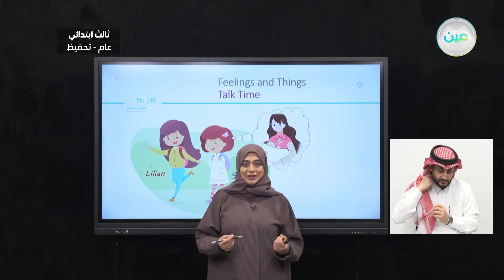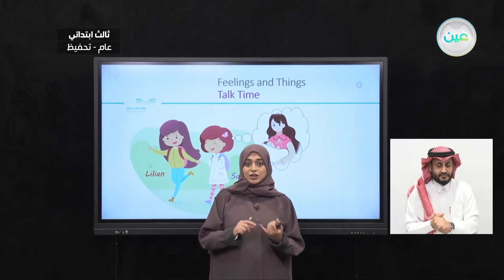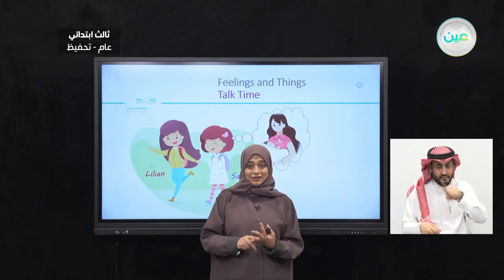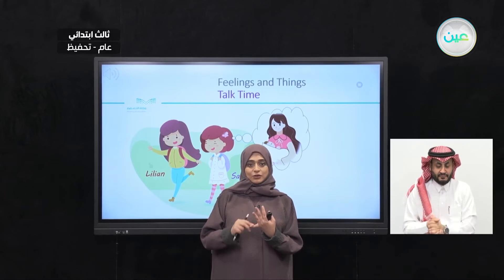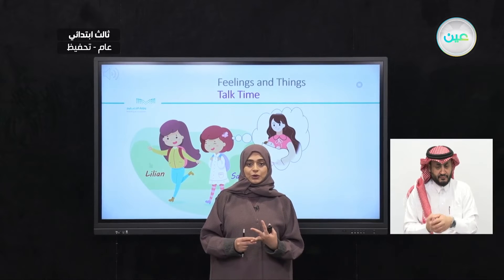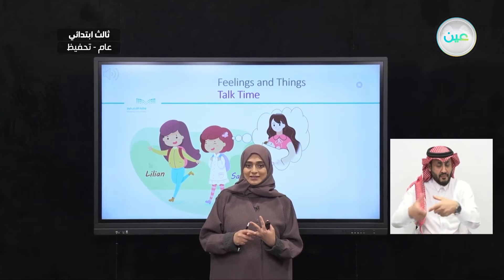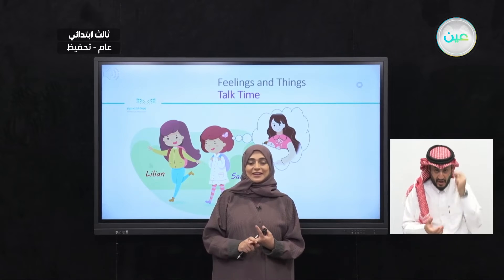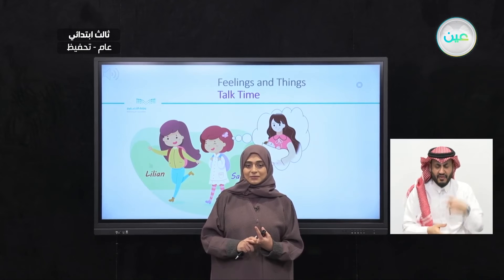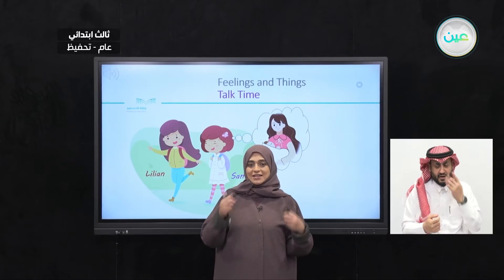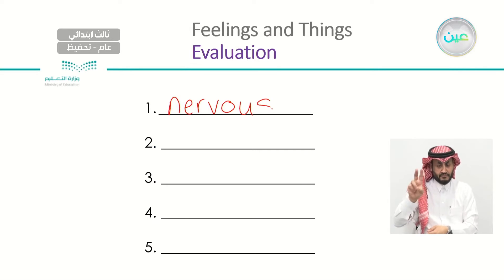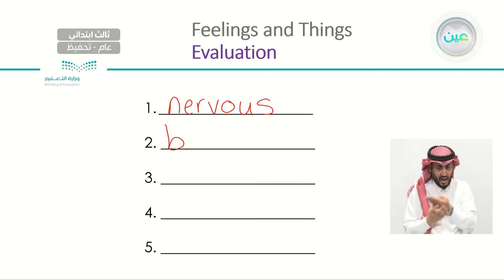What words did you hear connected to feelings? Nervous — Sama was feeling nervous. And at the end, was she still nervous? They were laughing and seemed excited. Can you tell me a place they're going to? They're going to the hospital to visit. Her mom just had a baby. And what else? Hungry — she's hungry for chocolate. So let's write the words together: nervous, baby brother, happy. There's something really important — did you notice that Lilian and Samah were together? They're friends.